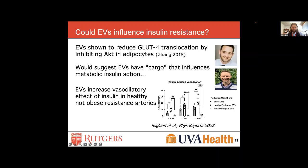We found that EVs specifically did increase endothelial function or insulin-induced vasodilation in healthy individuals, but not in people with metabolic syndrome. The open bars are lean healthy individuals; the bottom bar is a metabolic syndrome participant; gray bars are buffer only. Adding healthy EVs to the buffer, we found insulin generally increased vasodilation. But that was completely lost in patients with metabolic syndrome. This suggests that restoration of insulin sensitivity can in part be related to an EV-specific mechanism. We're currently pursuing work to understand how exercise may rescue some of this in metabolic syndrome patients.